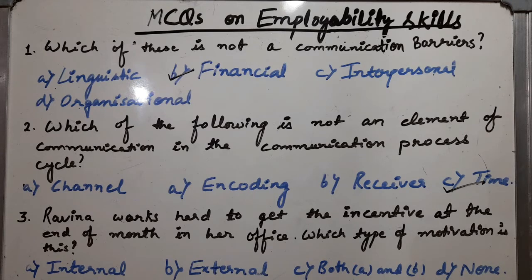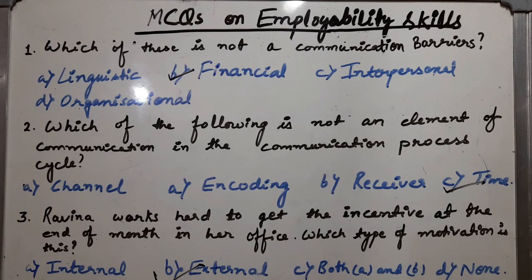Third MCQ: Raveena works hard to get an incentive at the end of the month in her office. Which type of motivation is this? The answer is external motivation. In Chapter 2, self-management skills of Part A, there are two types of motivation: internal and external. Internal motivation is the inner drive to achieve something — it is about our feelings. External motivation is when we are working for achieving some kind of reward.